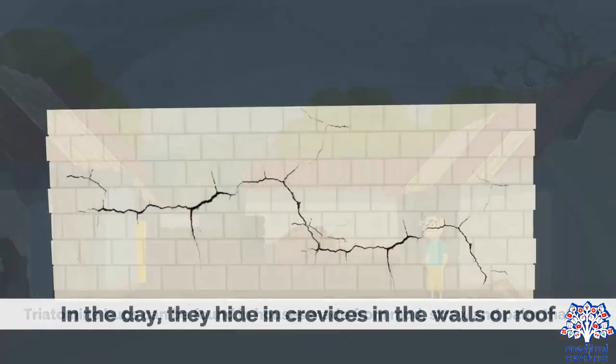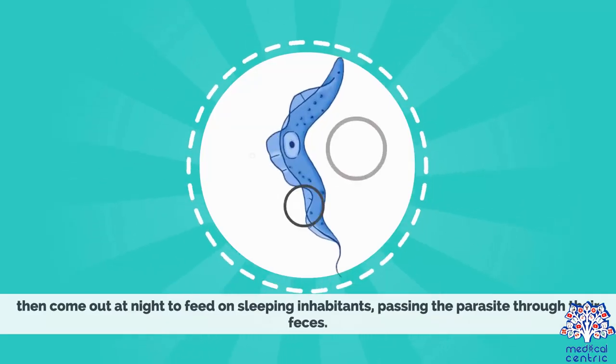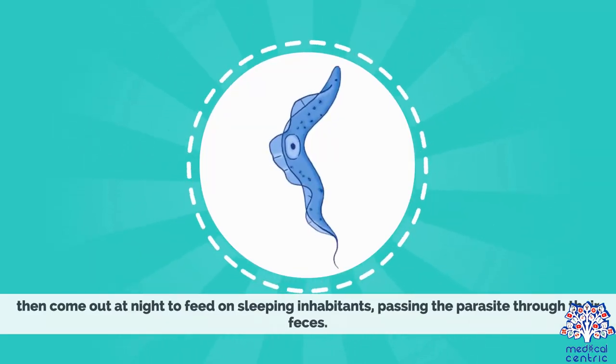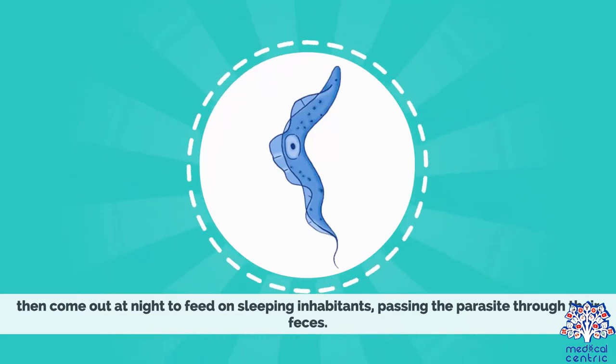In the day, they hide in crevices in the walls or roof, then come out at night to feed on sleeping inhabitants, passing the parasite through their feces.